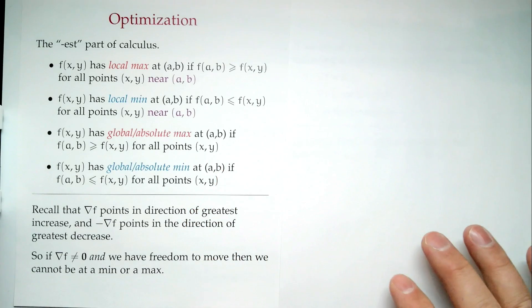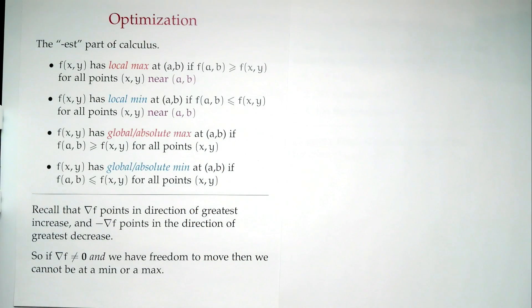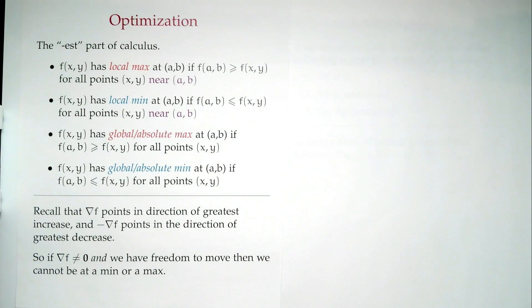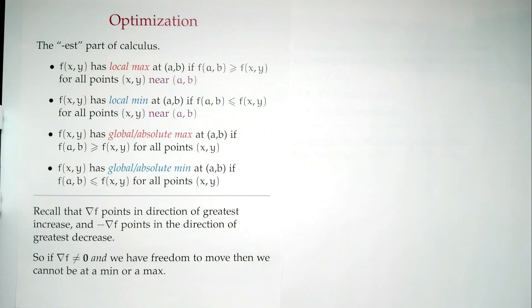Now on to the topic for today: optimization. Optimization is sort of the '-est' part of calculus — I want the biggest, the fastest, the slowest, the smallest, the most something. The important thing is we're trying to find the most something or the least something, so we call these maxima and minima. There are two notions of maximum and minimum.